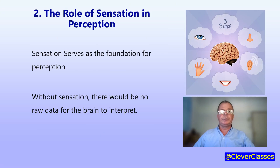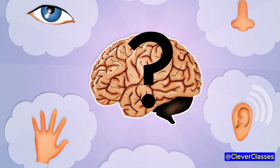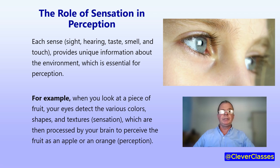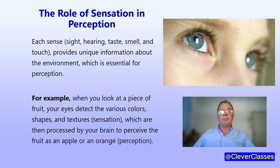Sensation serves as the foundation for perception. Without sensation, there would be no raw data for the brain to interpret the world around us. Each sense — sight, hearing, taste, smell and touch — provides unique information about the environment, which is essential for our perception of the world.